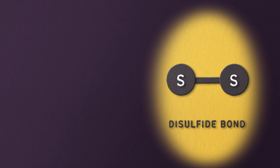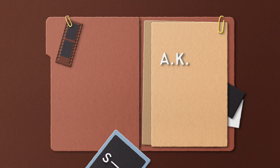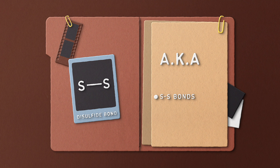The name's Bond. Disulfide Bond. Okay, maybe that's a little too mysterious for today's topic of disulfide bonds, but names are important. You might also know disulfide bonds as SS bonds or disulfide bridges, but no matter what name you're looking for, you've come to the right place.